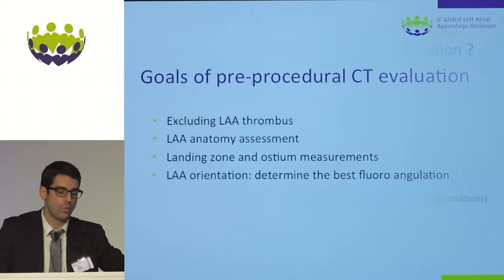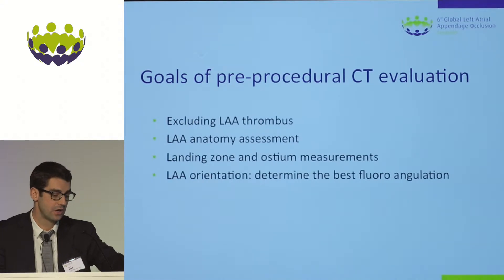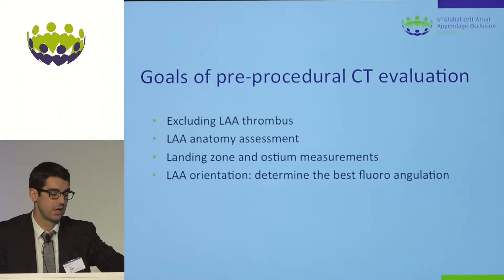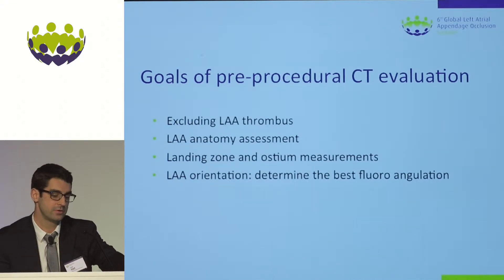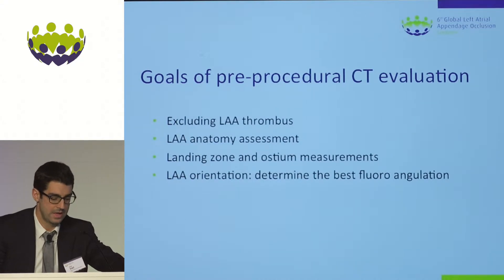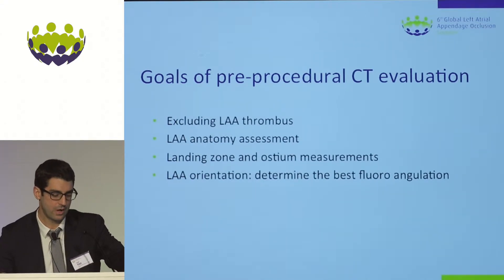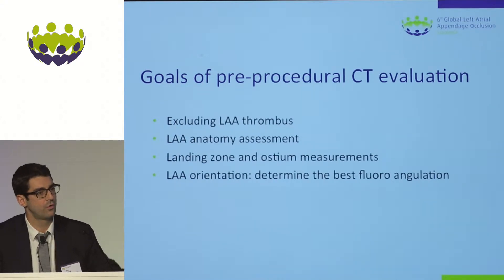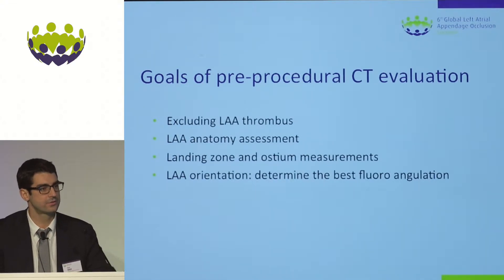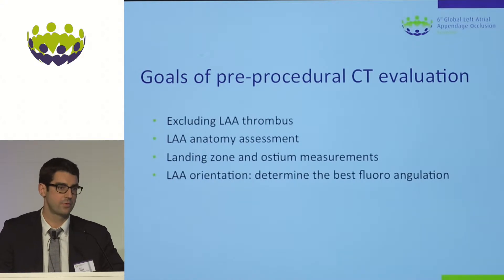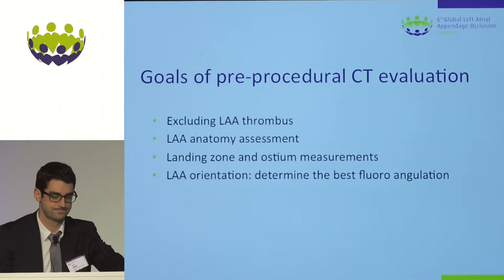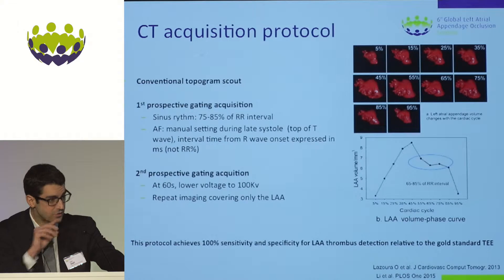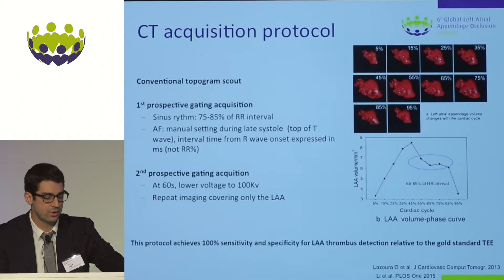What are the goals of the pre-procedural CT evaluation? First, we have to exclude LAA thrombus and assess the LAA anatomy, measure the landing zone and the ostium. With the Tremendio software, we can evaluate the best fluoroscopic angulation to avoid wasted time and unnecessary contrast injection or X-ray in the cath lab.